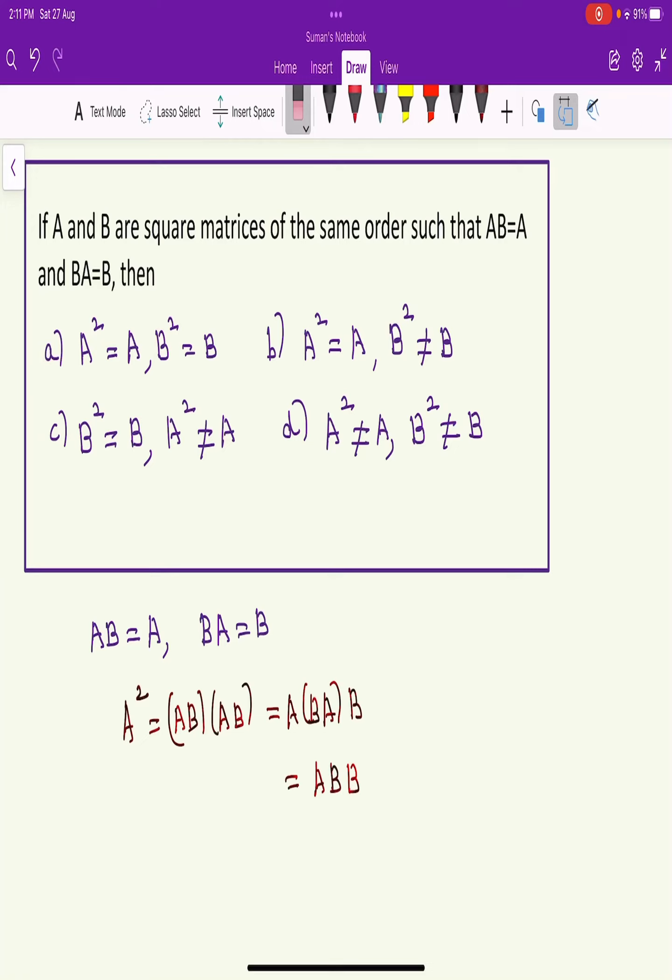If A and B are square matrices of the same order such that AB equals A and BA equals B, then choose from the following options.